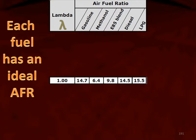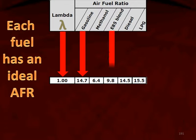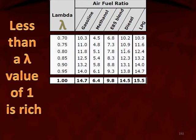Each fuel has its own ideal air fuel ratio. To get a lambda of 1.0, gasoline requires 14.7 parts of air to every one part of fuel. E85 is also common — it requires 9.8 pounds of air for every one part of fuel to achieve a lambda of one, or stoichiometric.